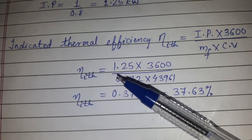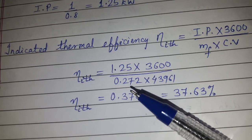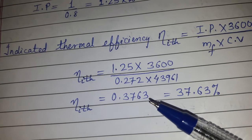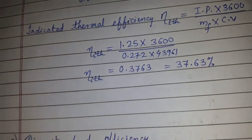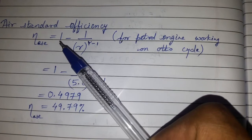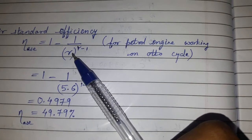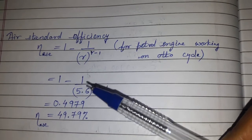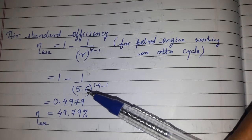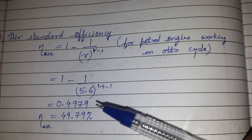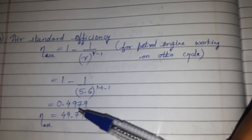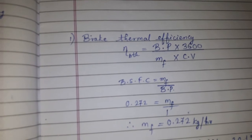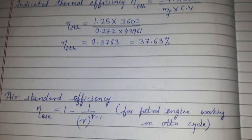So indicated thermal efficiency equals 1.25 multiplied by 3600, divided by 0.272 multiplied by 43961, giving 0.3763, which is equal to 37.63%. Now for air standard efficiency, the formula is 1 minus 1 upon r raised to gamma minus 1, for a petrol engine working on the Otto cycle. Substituting r equals 5.6 and gamma equals 1.4, we get air standard efficiency equal to 0.4979, that is 49.79%. This is how we calculated brake thermal efficiency, indicated thermal efficiency, and air standard efficiency.